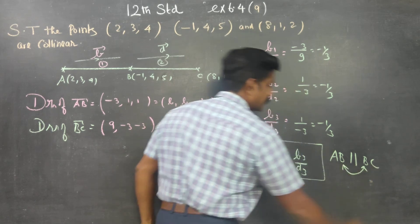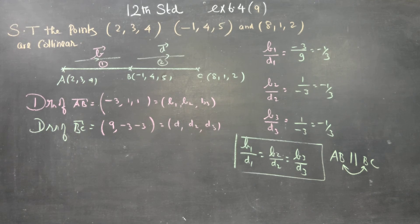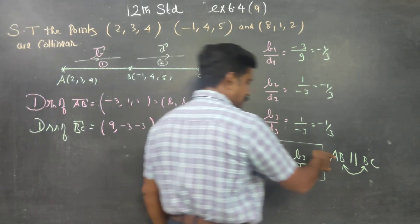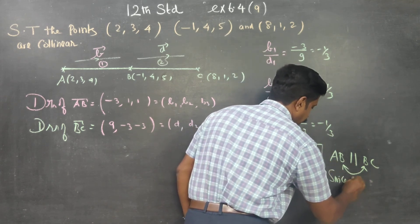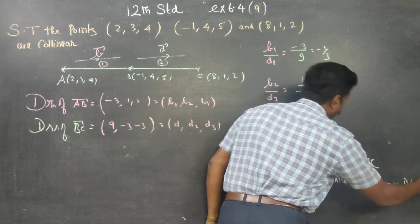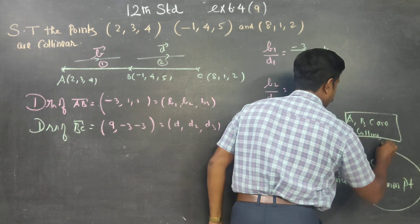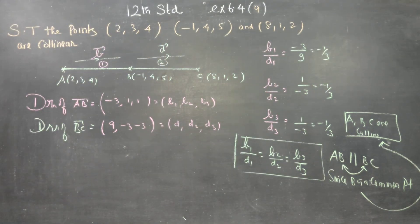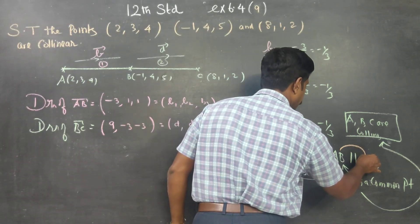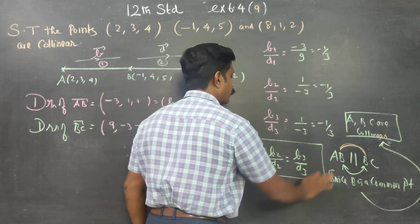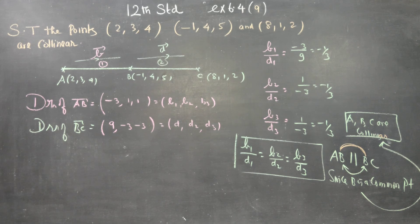Since B is a common point, these three points become collinear. This condition is only suited for parallel lines. Since B is a common point, the parallel condition is satisfied, so A, B, C are collinear.